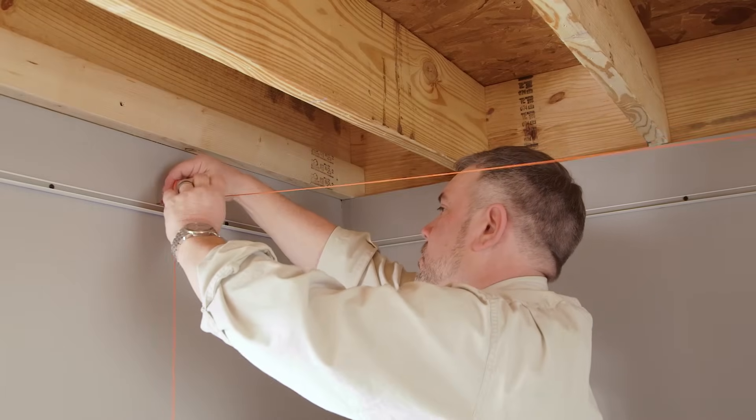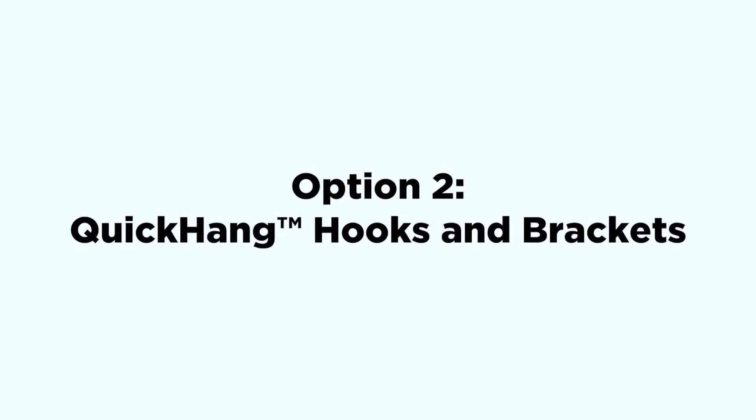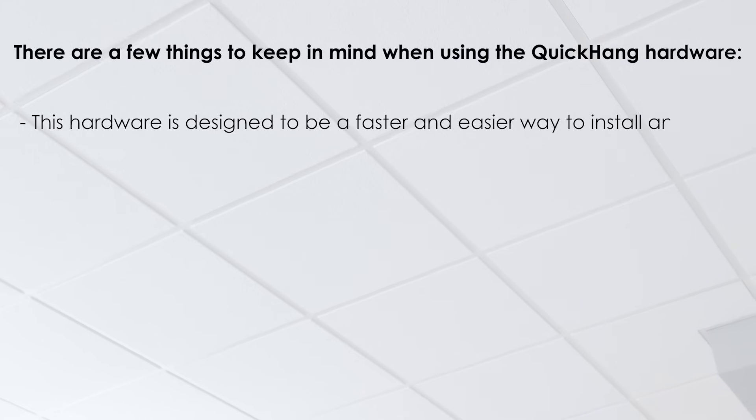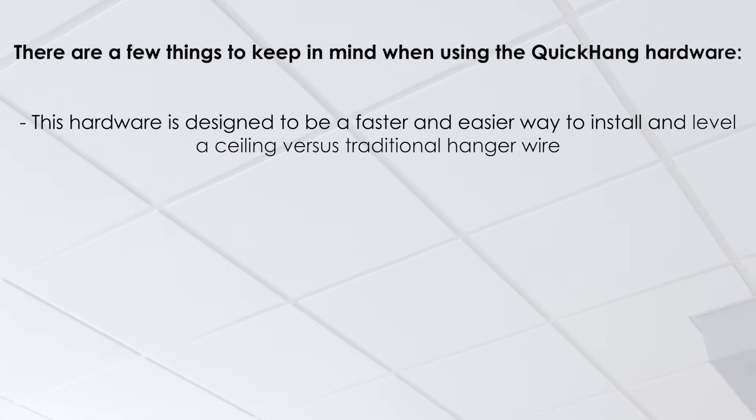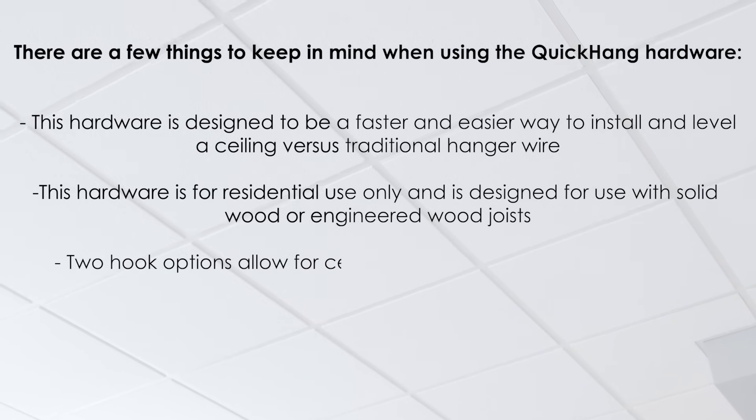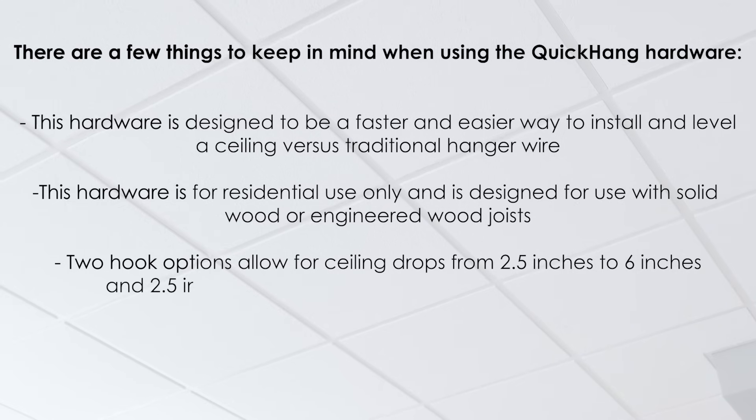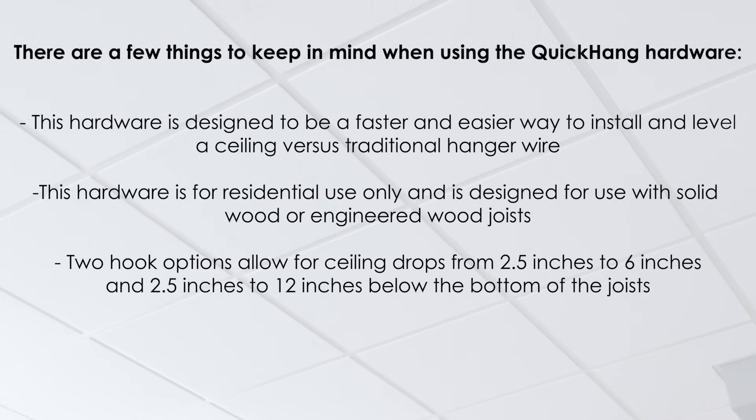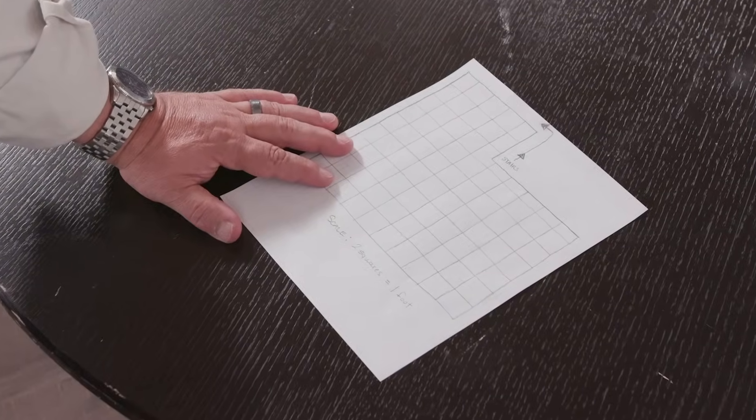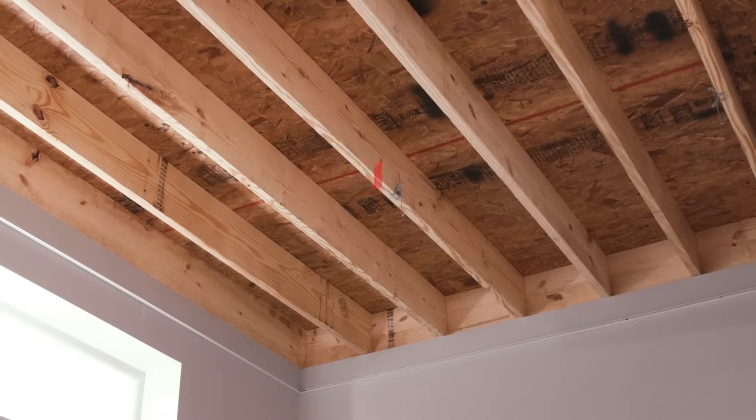Quick Hang Hooks and Brackets: There are a few things to keep in mind when using the Quick Hang hardware. This hardware is designed to be a faster and easier way to install and level a ceiling versus traditional hanger wire. This hardware is for residential use only and is designed for use with solid wood or engineered wood joists. Two hook options allow for ceiling drops from 2.5 inches to 6 inches and 2.5 inches to 12 inches below the bottom of the joists. The hardware is not for use on finished drywall ceilings. Plan your layout in the same manner you would using hanger wire. The Quick Hang hardware should be spaced 4 feet apart.